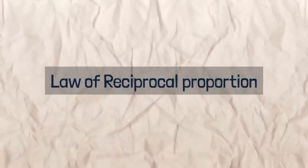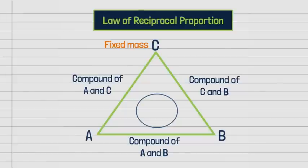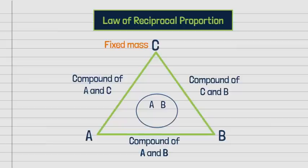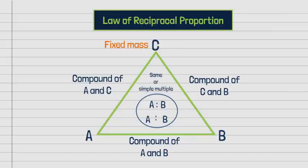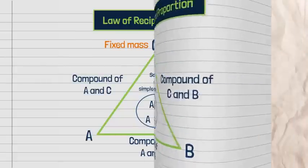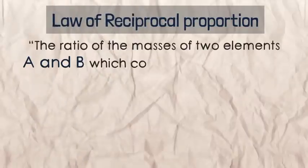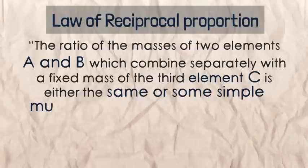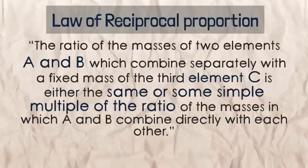Law of Reciprocal Proportion: Consider three elements A, B, and C at the vertices of a triangle, with the compounds they form on the edges. Taking a fixed mass of C in compounds formed with A and C, and B and C separately, we calculate the ratio of masses of A and B (step 1). Then we calculate the ratio in which A and B combine directly with each other (step 2). According to the law, the ratio from step 1 is either the same or a simple multiple of the ratio from step 2.